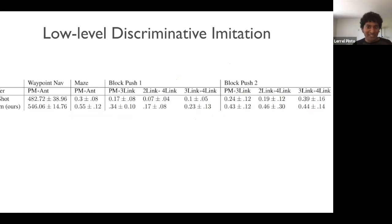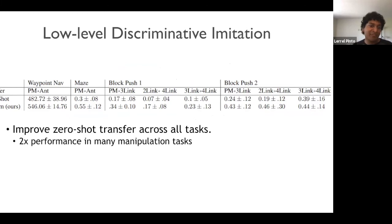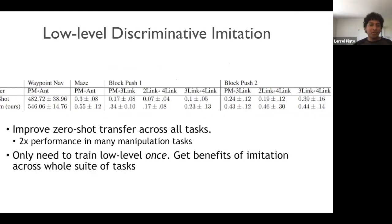And now what we see is across the board over a bunch of different benchmarks, this significantly helps. It gives us more than a 2x performance boost across manipulation and navigation tasks. Another thing which is interesting is that you only need to train your low-level once. So if you want to align A and B, you can do it on one task. And after the low levels are aligned, you can use the same low levels for a new task.